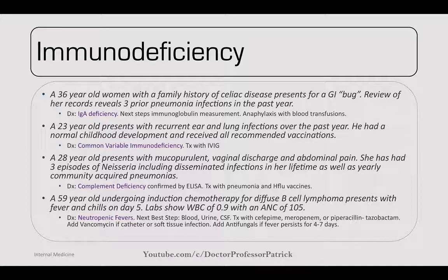Next, we've got a 59-year-old undergoing induction chemotherapy for diffuse B-cell lymphoma who presents with fever and chills on day five. Labs show WBCs of 0.9 with an ANC of 105. This is neutropenia and neutropenic fevers. The next best step is to do blood, urine, and CSF cultures. You can treat with cefepime, meropenem, or piperacillin-tazobactam. Add vancomycin if there are catheter or soft tissue infections. After four to seven days, if this persists, add antifungals as well.